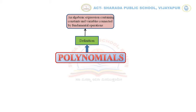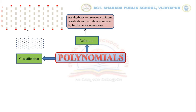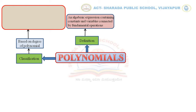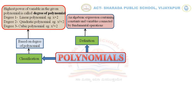Now we will discuss the classification. The first type of classification is based on the degree of the polynomial. The highest power of the variable in the given polynomial is called the degree of the polynomial. For each different degree, we use a different name: degree 1 is called a linear polynomial — example, x plus 2; degree 2 is called a quadratic polynomial — example, x squared plus 2; degree 3 is a cubic polynomial — example, x cubed plus 2. As the degree varies, the power of the variable also varies. This is the first type of classification.